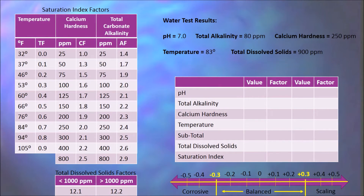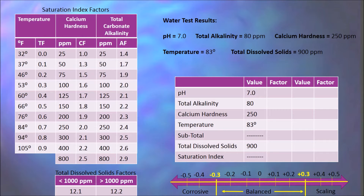In this example, our water test results show that we have a pH of 7.0, a total alkalinity of 80 parts per million, a calcium hardness level of 250 parts per million, a temperature of 83 degrees, and a total dissolved solids level of 900 parts per million. The first thing we should do is input these numbers into our worksheet.